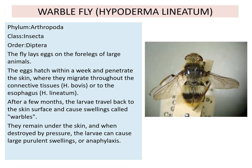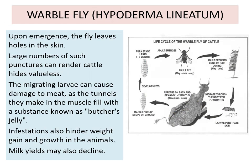The larvae remain under the skin, and when destroyed by pressure, they can cause large purulent swelling or anaphylaxis. Upon emergence, the fly leaves a hole in the skin. Large numbers of such punctures can render cattle hides valueless. The migrating larvae can cause damage to the meat as the tunnels they make in the muscle fill with a substance known as butcher's jelly.